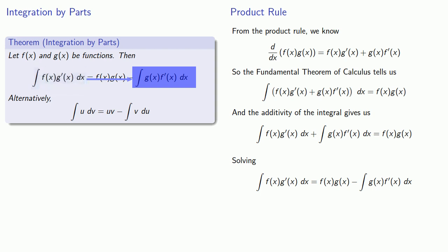Alternatively, we often express the integration by parts rule as: the integral of u dv is uv minus the integral of v du.